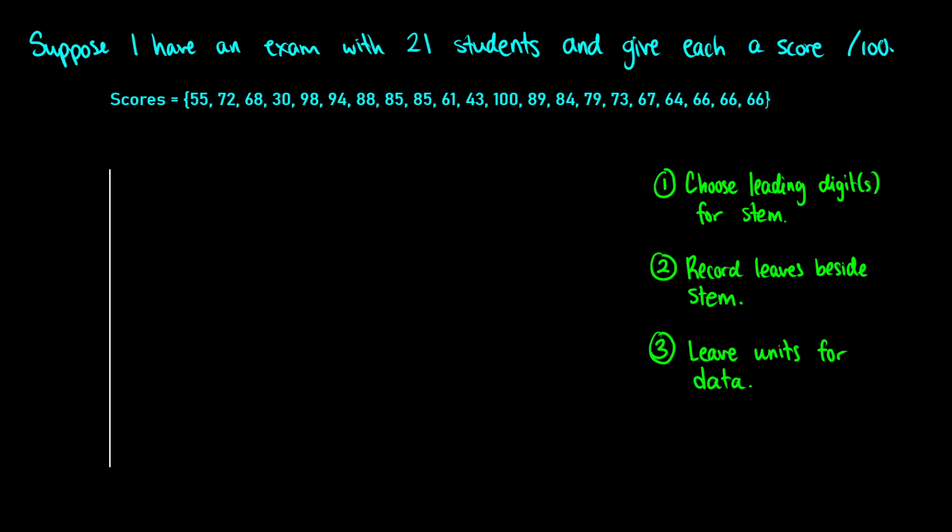I have an example here. Suppose I have an exam with 21 students and I gave each of them a score out of 100. We can think of this as a percentage or just a raw score. I have 21 scores ranging from 30 all the way up to 100. How do I construct a stem and leaf display?